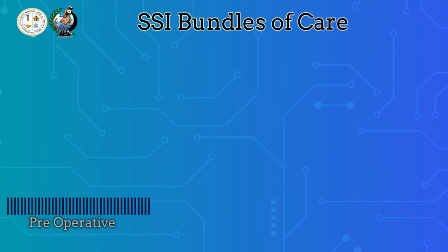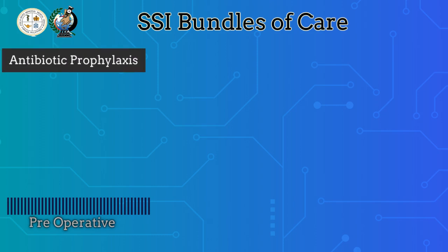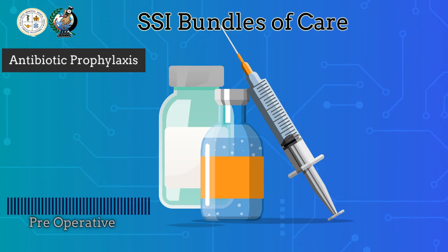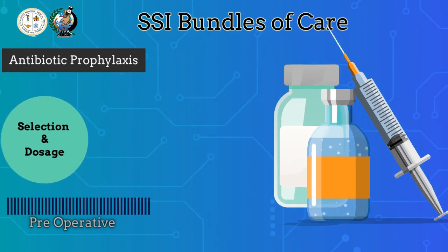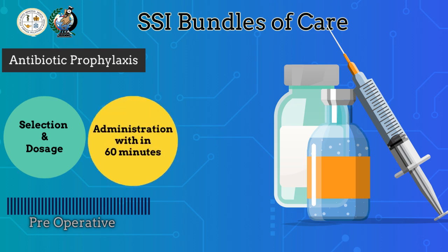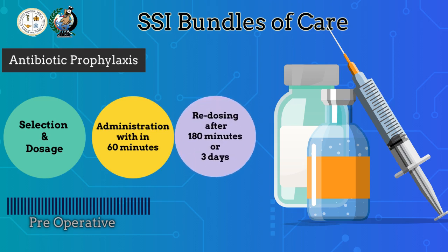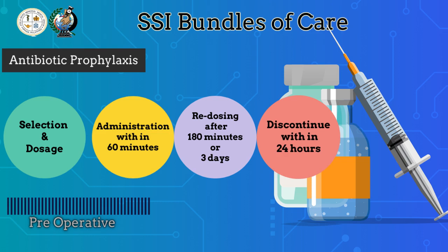The next management as part of the bundles of care in preventing SSI under the pre-operative phase is antibiotic prophylaxis. For some surgeries, one of the ways to prevent surgical site infections is to give antibiotics as prophylaxis. First, selection and dosage of the antibiotic is important. Second, it is recommended to start administering the patient's antibiotics within 60 minutes, after which reducing it at 180 minutes or after 3 days. Lastly, discontinuing the antibiotics within 24 hours is recommended.